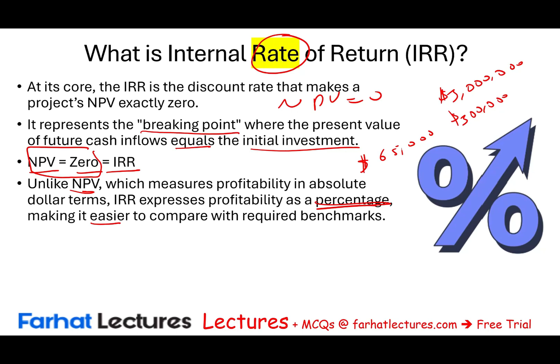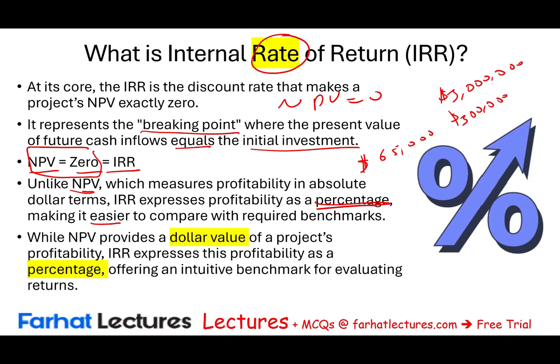Remember with NPV, when we have two projects with the same initial investment, we compare the higher NPV. But sometimes we'd have to go to the profitability index. With IRR, all we have to do is compare percentages, which is much easier. NPV provides a dollar value of project profitability; IRR expresses this profitability as a percentage, offering an intuitive benchmark for evaluating return.